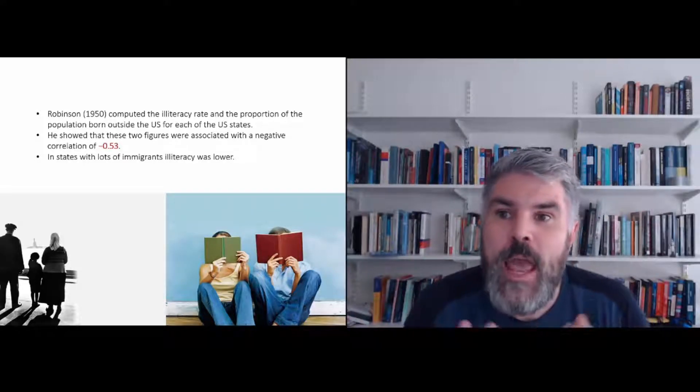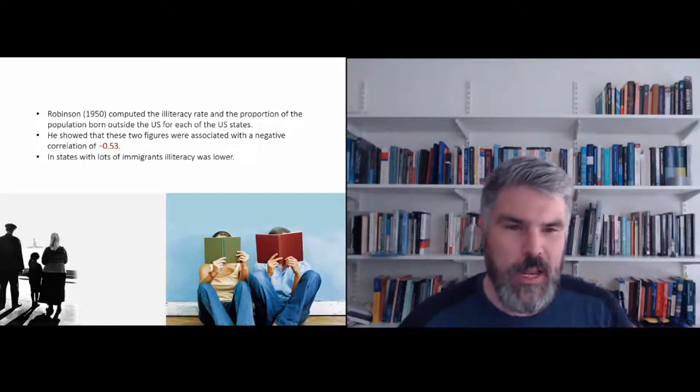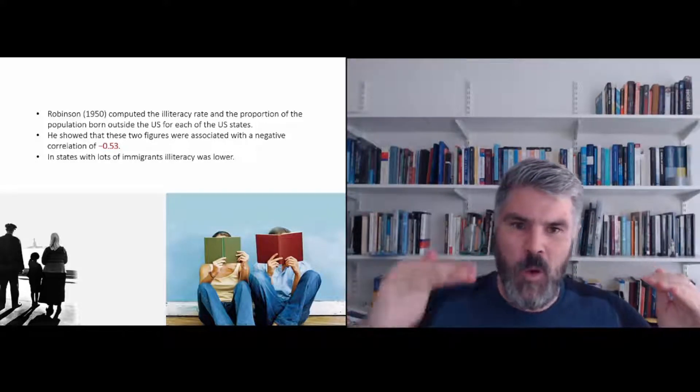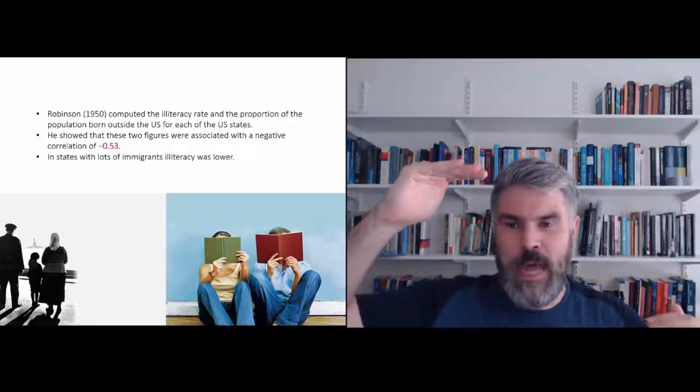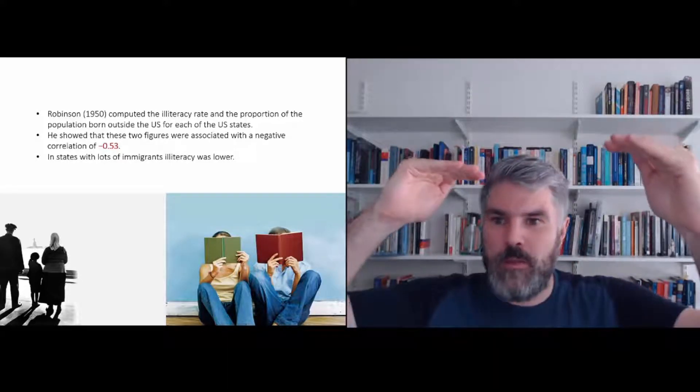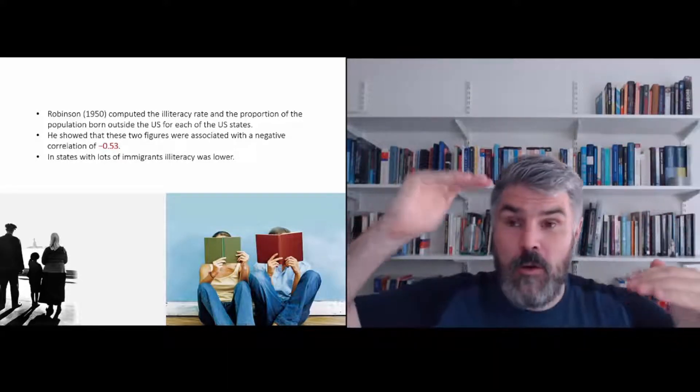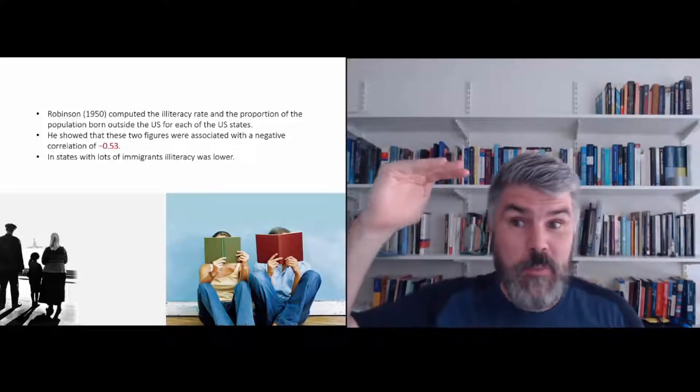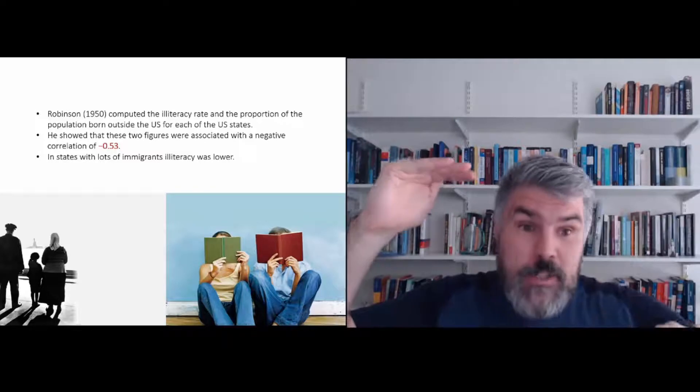Robinson found a negative correlation, minus 0.53. That means like the one goes up, the other one goes down. So in this case, the number of immigrants goes up, the illiteracy rate goes down. So basically, it seems that in states with lots of immigrants, illiteracy was low.